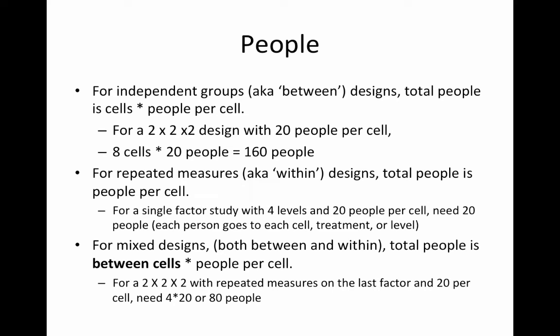To find the number of people needed, in between or independent groups designs, the total number of people is going to be the number of cells times the number of people per cell. So with a two-by-two-by-two design and twenty people per cell, we have eight cells times twenty people per cell, which requires 160 people to run our study.